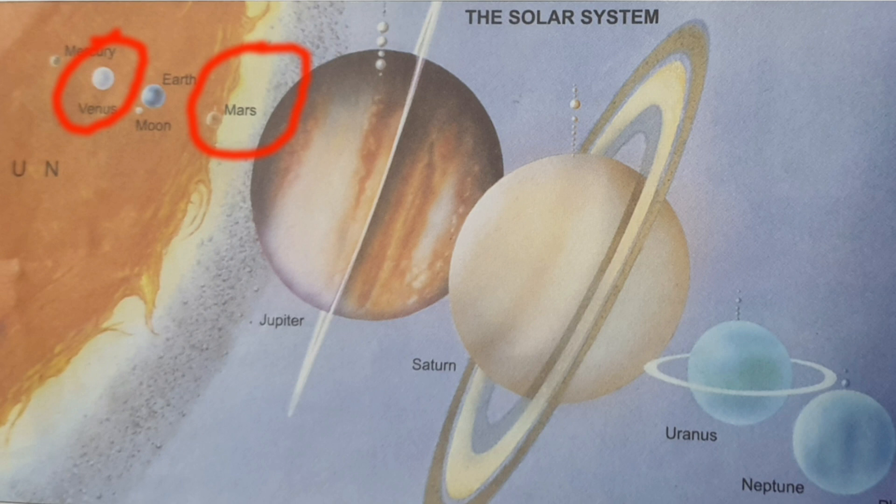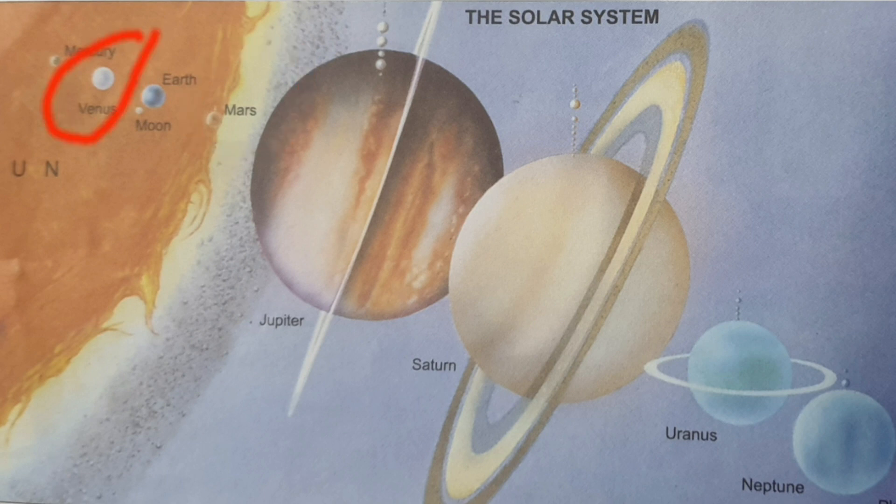Do you know which is the hottest planet? Venus is the hottest planet because carbon dioxide is the major component of its atmosphere.